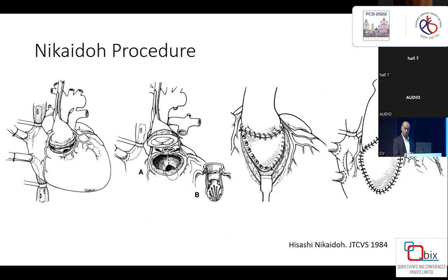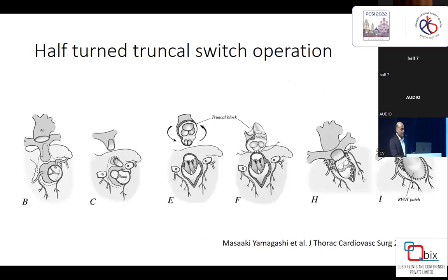The Nikaido procedure involves posterior translocation of the aortic root with intact coronaries. Modifications have followed, adding LeCompte maneuver with pivoted transfer on the left coronary and reimplanting the right coronary. The Truncal Switch has the advantage of harvesting both roots en bloc, rotating them 180 degrees, and reimplanting the coronaries — addressing both LV and RV outflow issues with good alignment, using patch or valved patch techniques without a conduit.